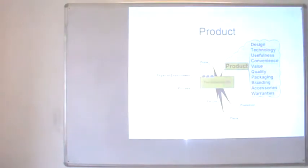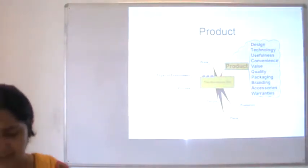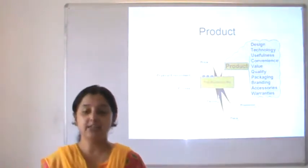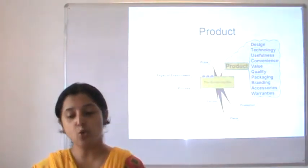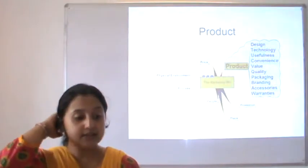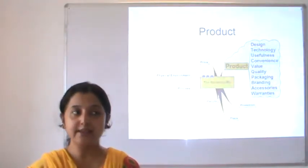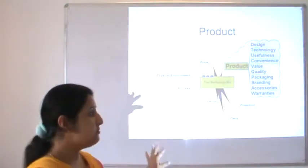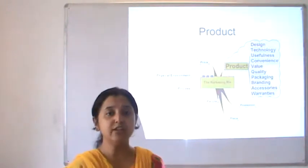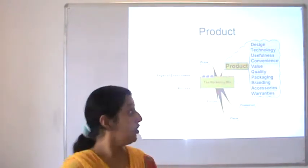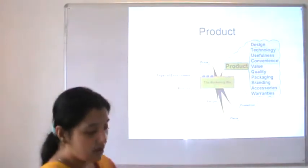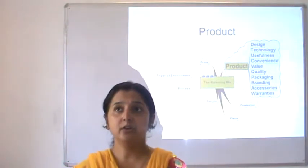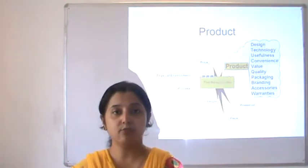The second marketing mix variable is product. Anything that a company offers to the customer for need satisfaction is termed a product. With the passage of time, the scope of this offering has increased multiple times. As against early times when a product was just the basic physical entity, today a product means much more — it is a bouquet of various benefits in the form of design, technology, utility, convenience, value, quality, packaging, branding, accessories and warranties and guarantees.